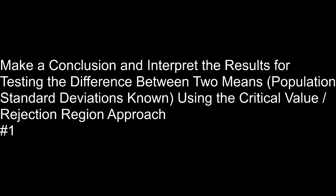This video covers the objective of making a conclusion and interpreting results for testing the difference between two means, with population standard deviations known. That means we'll be using a z-score, talking about normal distributions and not Student's t. This uses the critical value or rejection region approach.